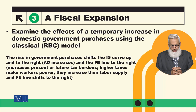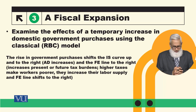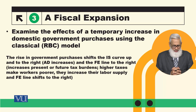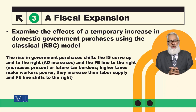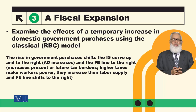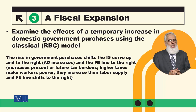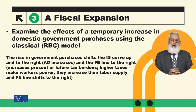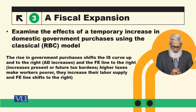Now we examine the effects of a temporary increase in domestic government purchases using the classical RBC model. A rise in government purchases shifts the IS curve up and to the right, because the IS curve represents the goods market and government spending is an important component of total goods market demand.